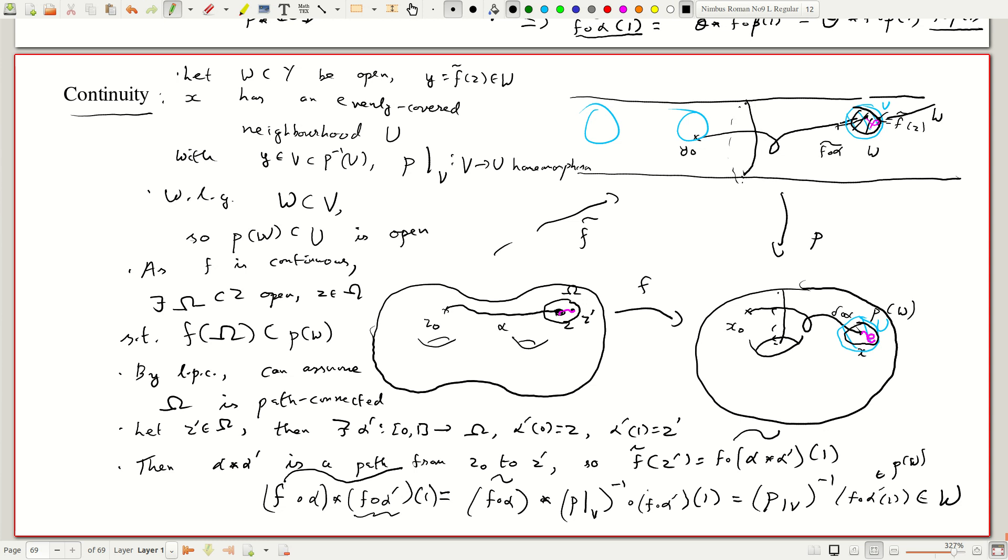And little means it actually maps into an evenly covered neighborhood. And from that evenly covered neighborhood we can simply use the local homeomorphism to invert.